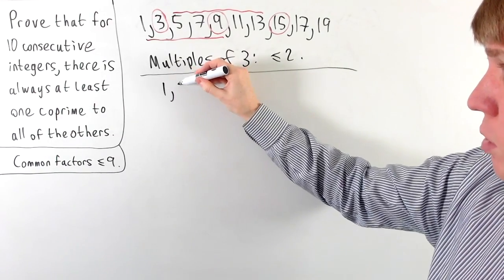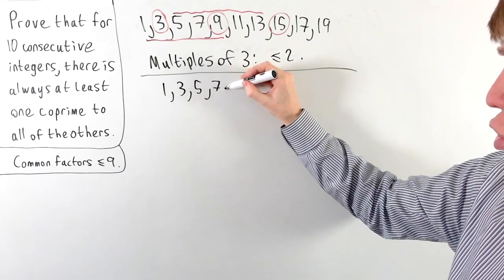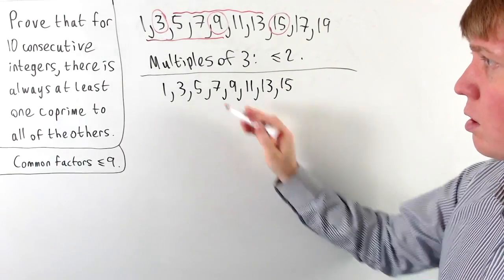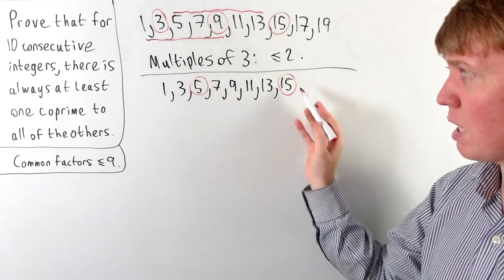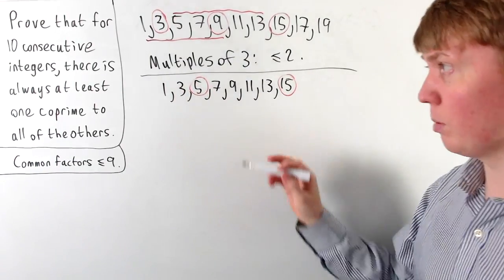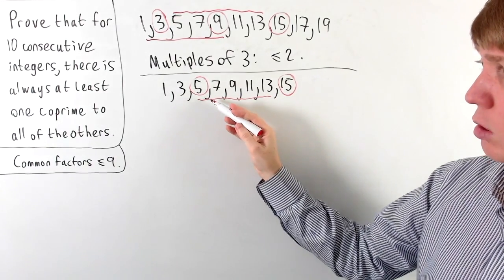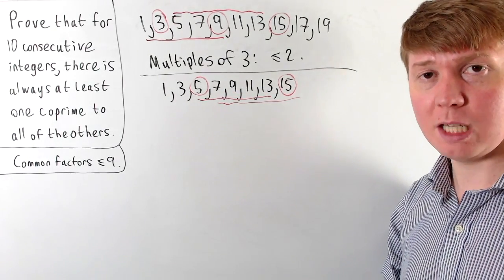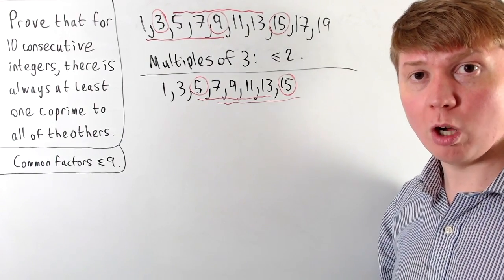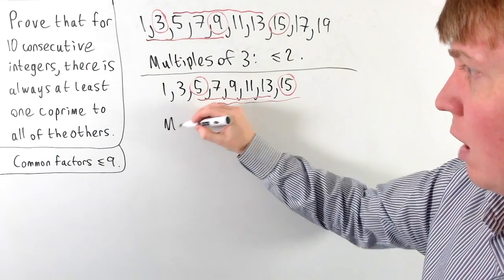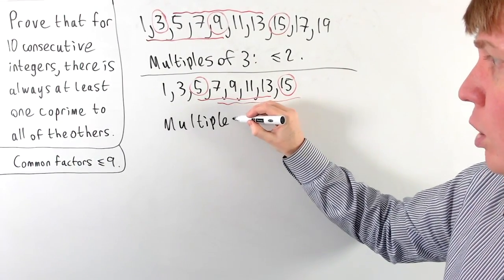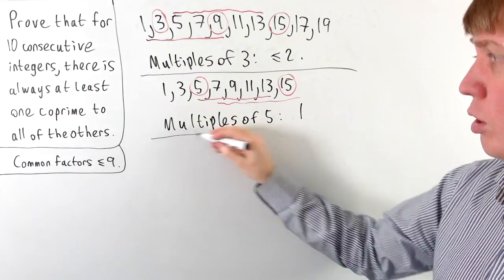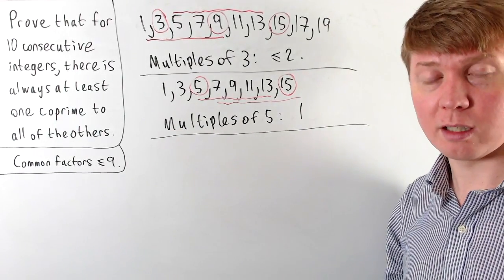We'll do the same thing for multiples of 5. If we wanted to have 2 multiples of 5, the closest we can get is, for example, 5 and 15, but these are 10 apart — the furthest apart we could be is 9 apart in 5 consecutive odd numbers. So we've got 5 to 13, or we could have 7 to 15, but you can't include both 5 and 15. So we're going to have at most 1 multiple of 5. In fact, you'll always have exactly 1 multiple of 5, because it's not possible to have 0 multiples of 5.